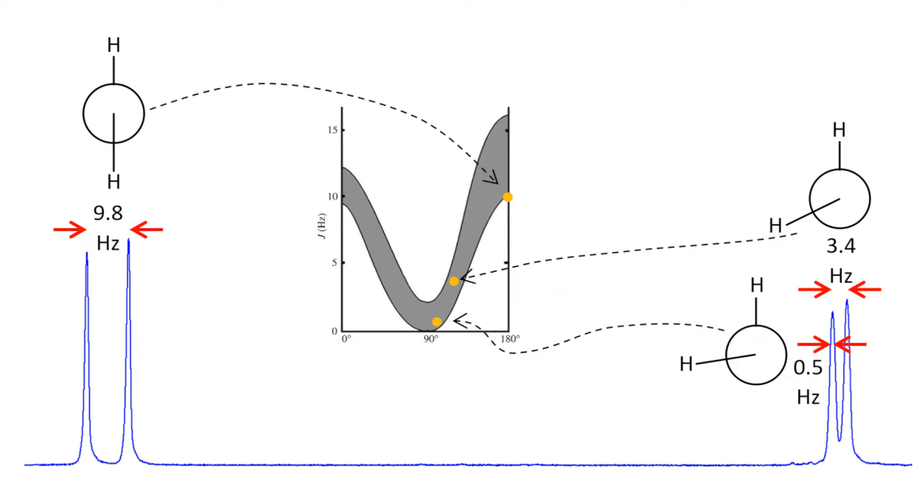However, three bond and longer range couplings are dependent on other factors such as conformation. Three bond couplings depend on the dihedral angle, and longer range couplings are small and depend on conformation. A dihedral angle near 0 degrees or 180 degrees gives a larger coupling than for dihedral angles near 90 degrees.